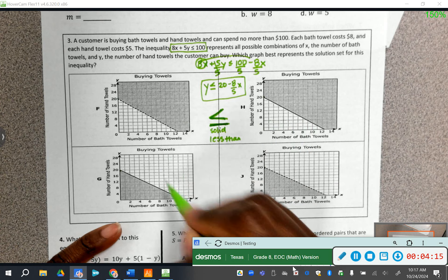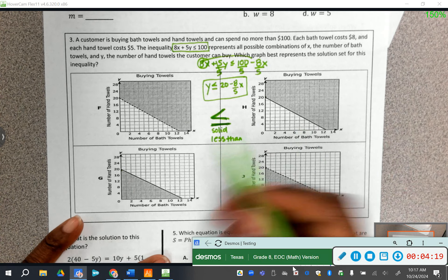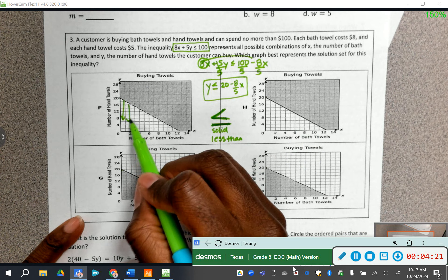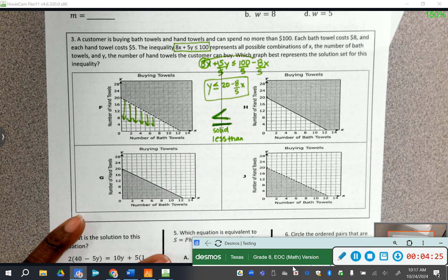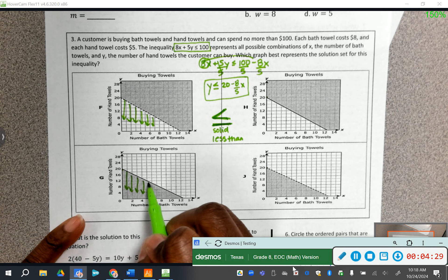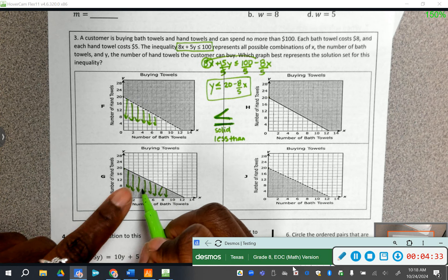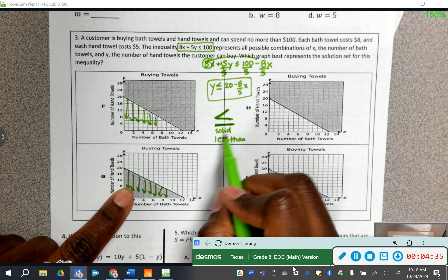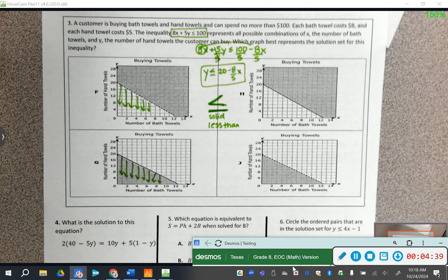So you're looking for which line is solid and which one is shaded less than, which means it's shaded under the line. Is the shaded side under this line? No. The shaded side is not under this line. Is the shaded side under this line? Yes. The shaded side is under this line, but is it a solid line? Yes, it is a solid line. So that looks like that would be your answer. Moving on.